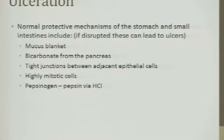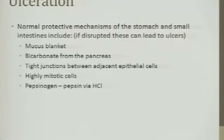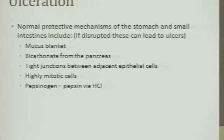Ulcerations — especially in the stomach. The stomach has high acidity, so we need protective mechanisms in the stomach and also in the duodenum. You're spitting that really acidic chyme — I think it's pH 2 in the stomach — into the duodenum. One of the first protective mechanisms is a mucus blanket on the surface of the stomach.